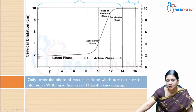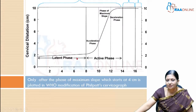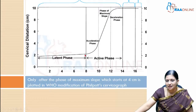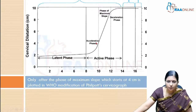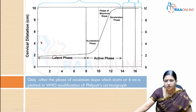During the latent phase there is hardly any dilatation in the cervix — it just stays at 1 to 2 centimeters. Once the patient goes into the active phase, there is an acceleration phase, a phase of maximum slope, and a deceleration phase. The phase of maximum slope starts at 4 centimeters dilatation, and after 4 centimeters we are supposed to start charting the partogram.